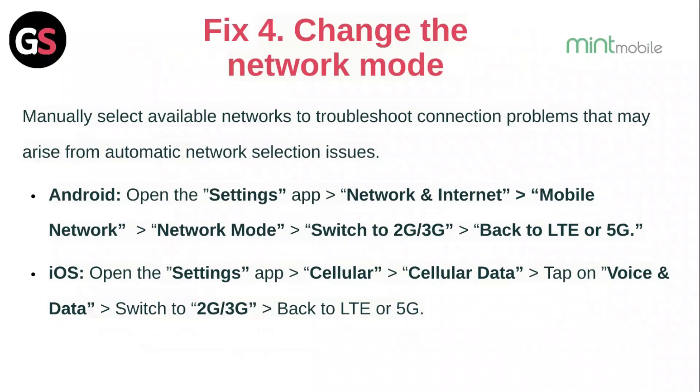For iOS, open the Settings app, then Cellular, then Cellular Data. Tap on Voice and Data, switch to 2G/3G, and then turn back to LTE or 5G.